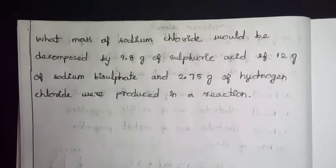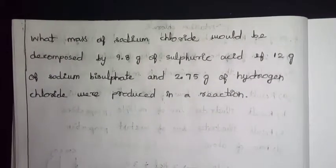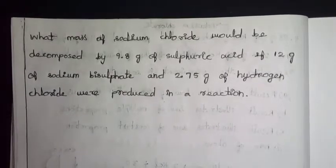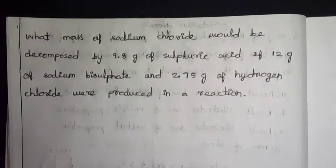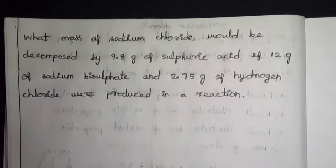Hello friends, in this video we will see what mass of sodium chloride would be decomposed by 9.8 gram of sulfuric acid if 12 gram of sodium bisulfate and 2.75 gram of hydrogen chloride were produced in reaction.